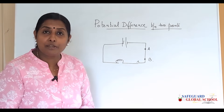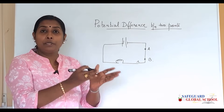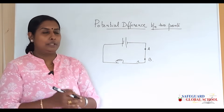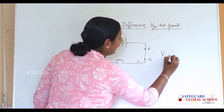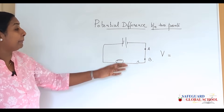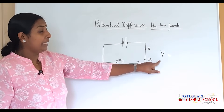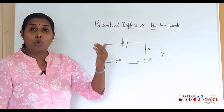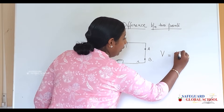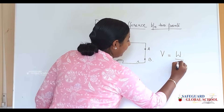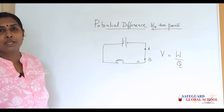The definition of potential difference: it is the work done in bringing a charge from a particular point of a circuit to another point. Potential difference is denoted by the letter V. The mathematical equation comes from this definition — V is equal to the work done per unit charge.